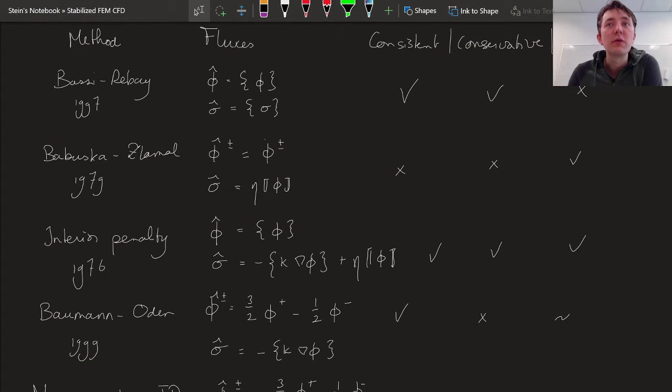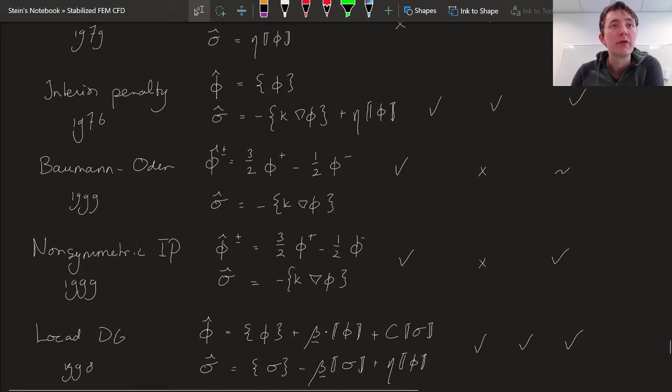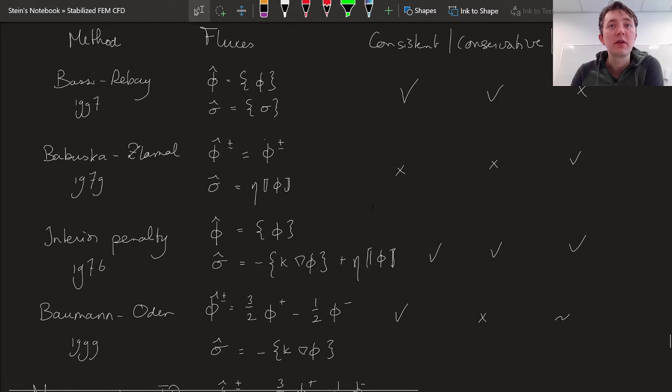So here we have it, this is a big table with many different choices of potential numerical fluxes that have been proposed in literature for the last 50 years to treat this diffusion problem.